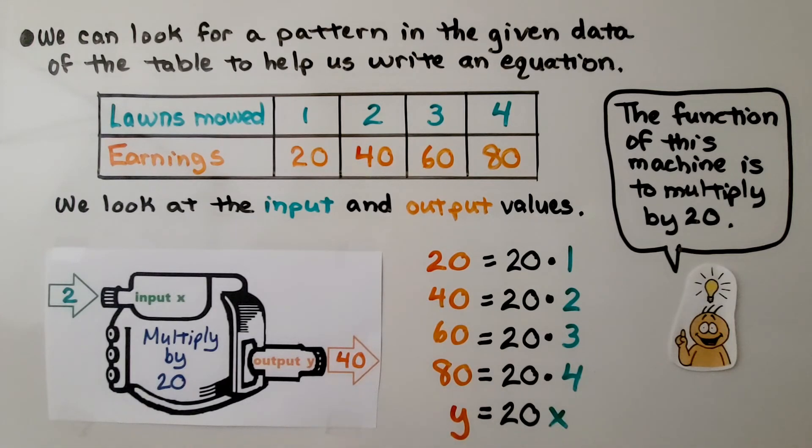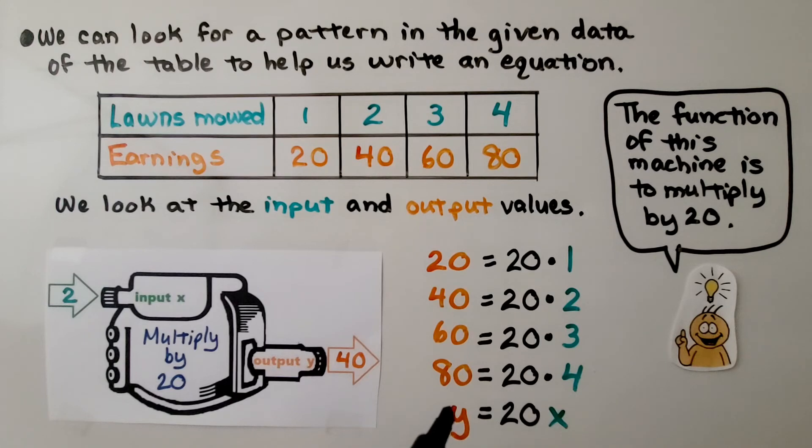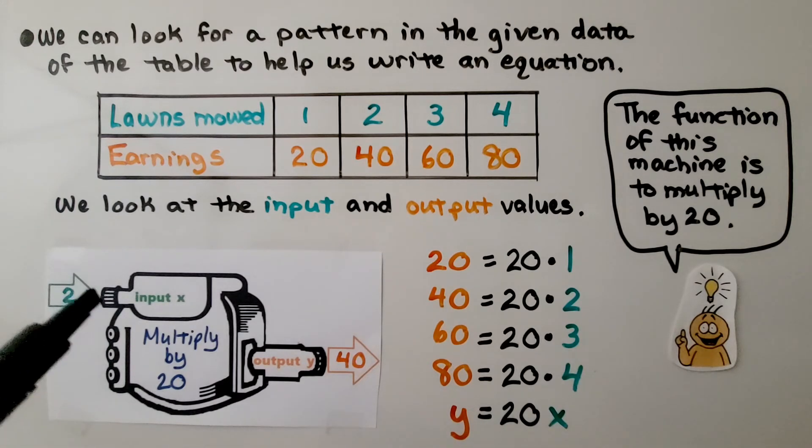Our little function machine, if we put in a 2, it's going to multiply it by 20 and our output will be 40. Our equation is Y = 20X. The output is equal to 20 times the X value.